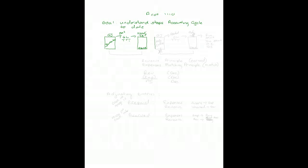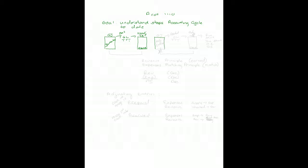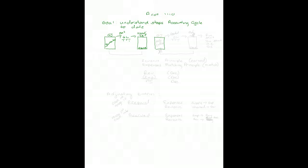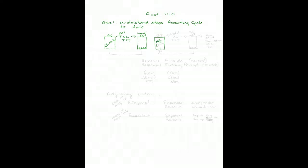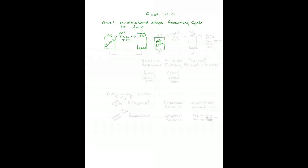At the end of the accounting period, whatever it is, you need to review each account on the unadjusted trial balance. Some of the accounts will have wrong balances, and you'll need to make adjusting entries. The adjusting entries are made in the general journal and they are posted to the general ledger.